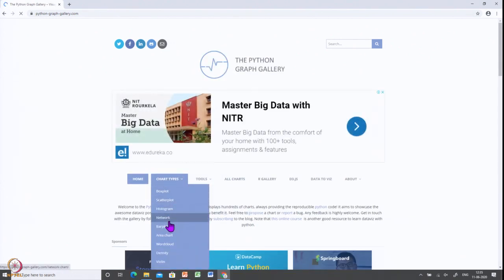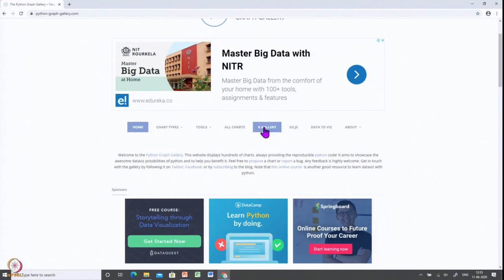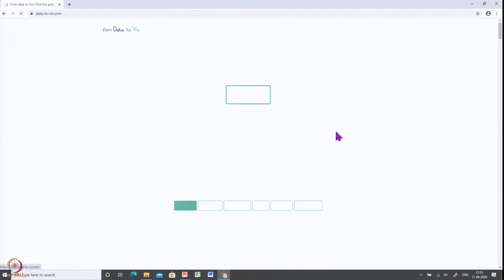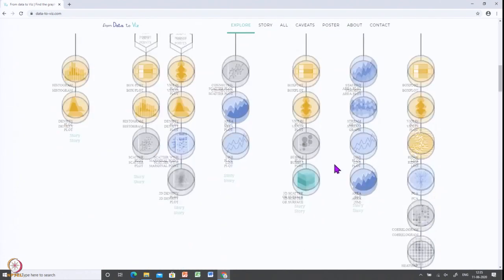He has all chart types - scatter plot, histogram, network, bar plot, density, and others. That is the gallery. I would suggest you to go and check the data to visualization and pick the chart based on your data type and requirement.